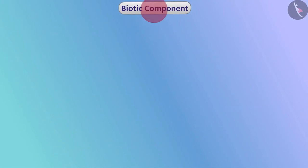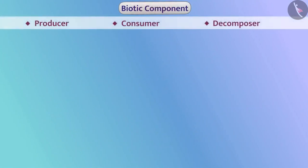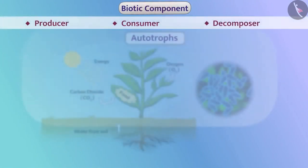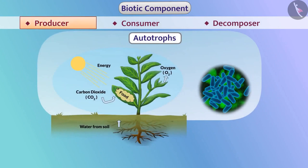If we talk about biotic components, then they can be of different types. Producers — the autotrophs such as green plants and some bacteria — which produce food for the entire ecosystem through photosynthesis are known as producers.